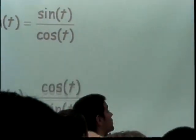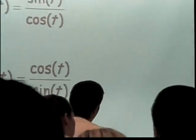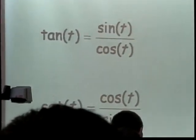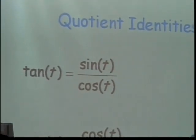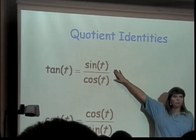The next one is the cotangent function, and it is the cosine of the angle divided by the sine of the angle. You may notice that it's just this thing flipped over. You notice that?